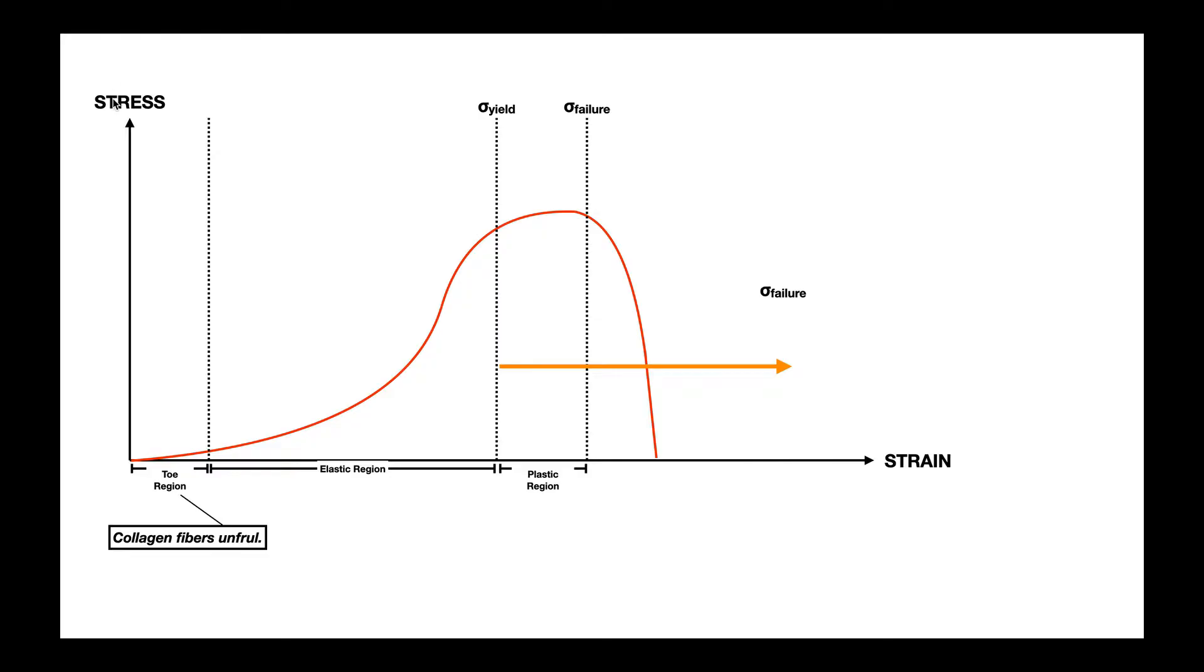On the vertical axis, we have stress, and on the horizontal, we have strain. So first of all, strain is really how much force is being used to put tension on a particular fiber or structure.